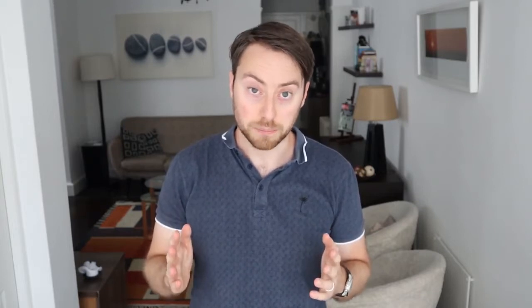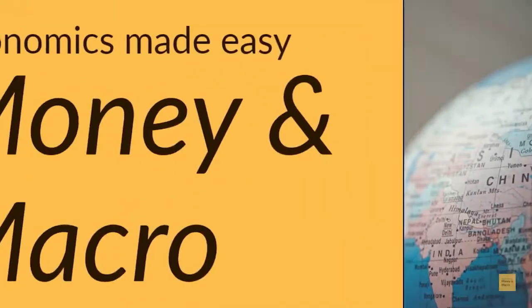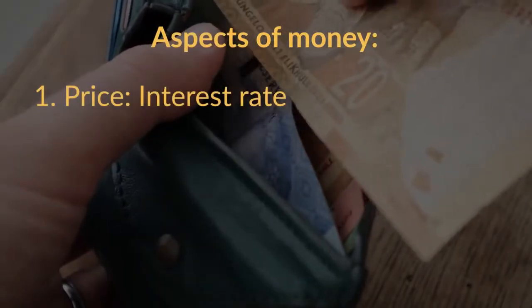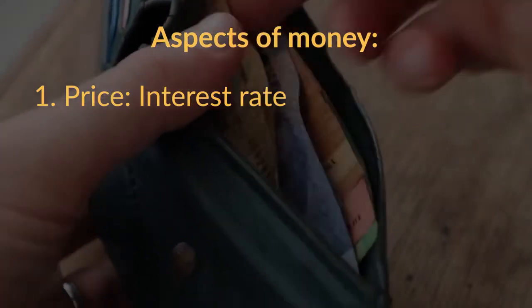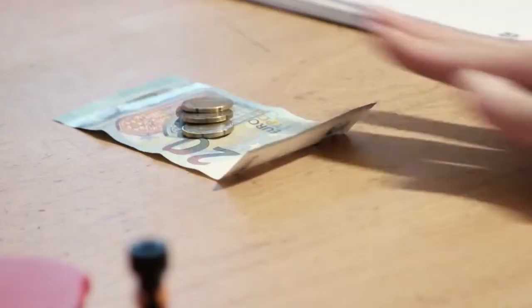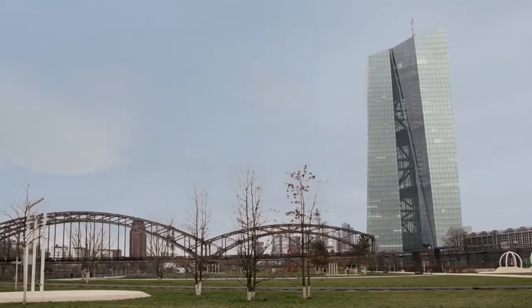Let's start with the interest rate. In this video, I will cover how central bankers use the interest rate to control the money supply. How do central banks control our money? Let's make a distinction between two aspects of money: first, there's the price of money — the interest rate — and second, there's the total amount of money that is circulating in the economy.